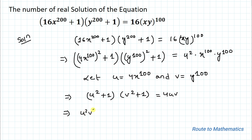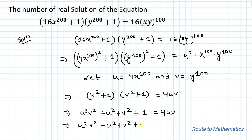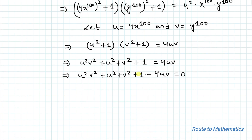Expanding the left-hand side gives u²v² + u² + v² + 1. Taking 4uv from the right-hand side to the left-hand side, this becomes u²v² + u² + v² + 1 − 4uv = 0.